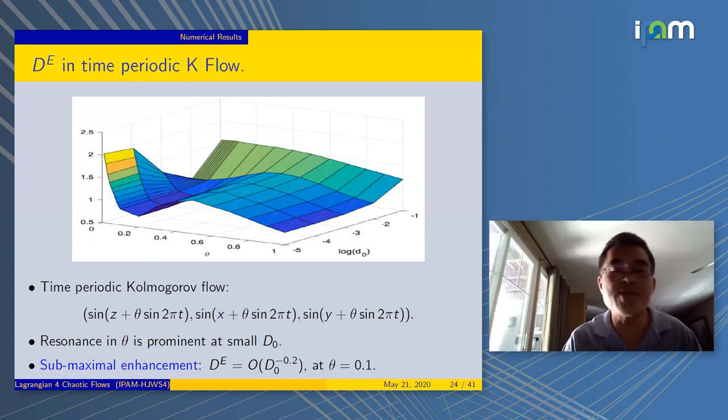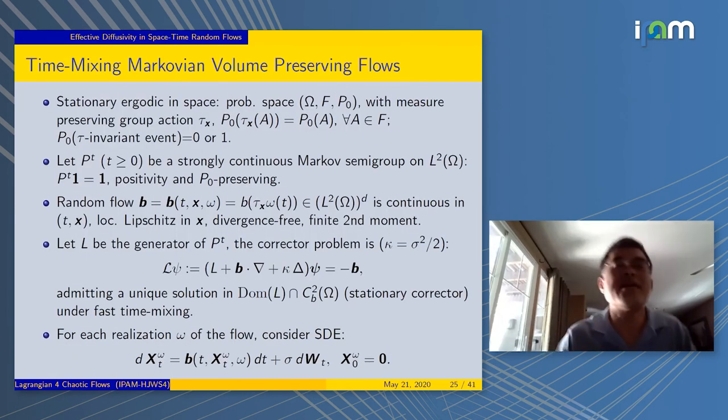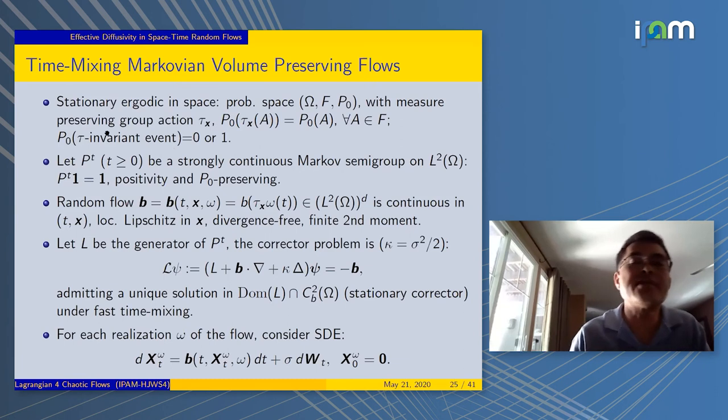We could handle the Kolmogorov flow. This has never been computed before. So we're very proud that the Lagrangian approach works in three dimensions. Now let's move on to the stochastic flows. I'd like to consider the time-mixing, because mixing is critical. In particular, it's Markovian time and volume-preserving.